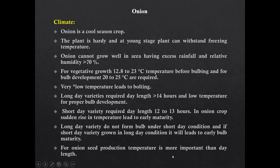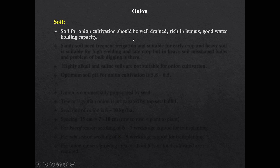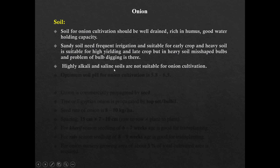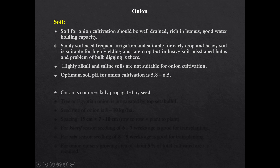For onion seed production, temperature is more important than day length. Soil for onion cultivation should be well-drained, rich in humus, and having good water holding capacity. Sandy soil needs frequent irrigation and is suitable for early crop. Heavy soil is suitable for high-yielding and late crop, but in heavy soil there is the problem of malformation of bulb and difficulty in bulb digging. Highly alkaline and saline soils are not suitable for onion. Optimum soil pH for onion cultivation is 5.8 to 6.5.